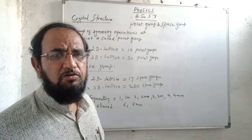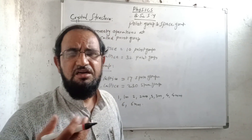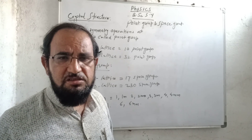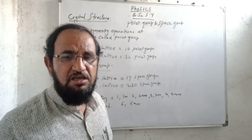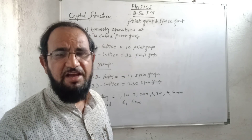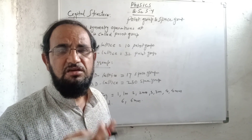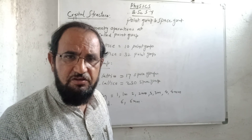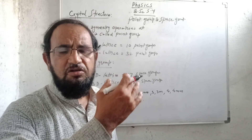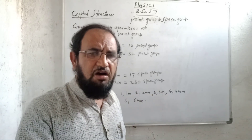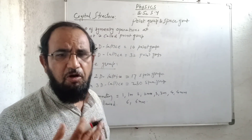We know about symmetry operations. There are different symmetry operations — for example, translation operation, then reflection operation, then inversion operation. All these operations are performed about a point, about a lattice point.